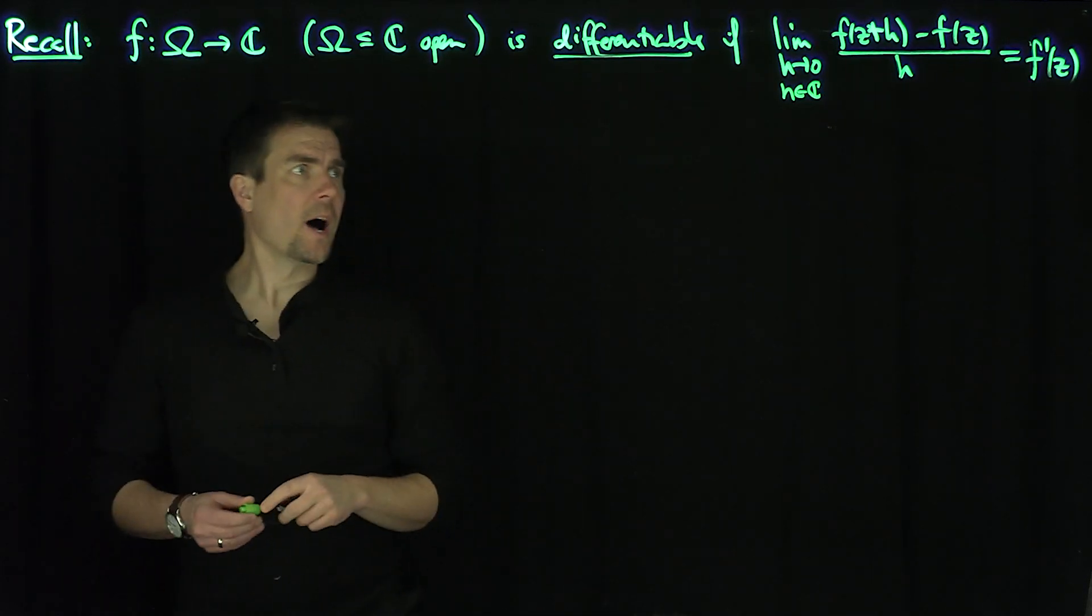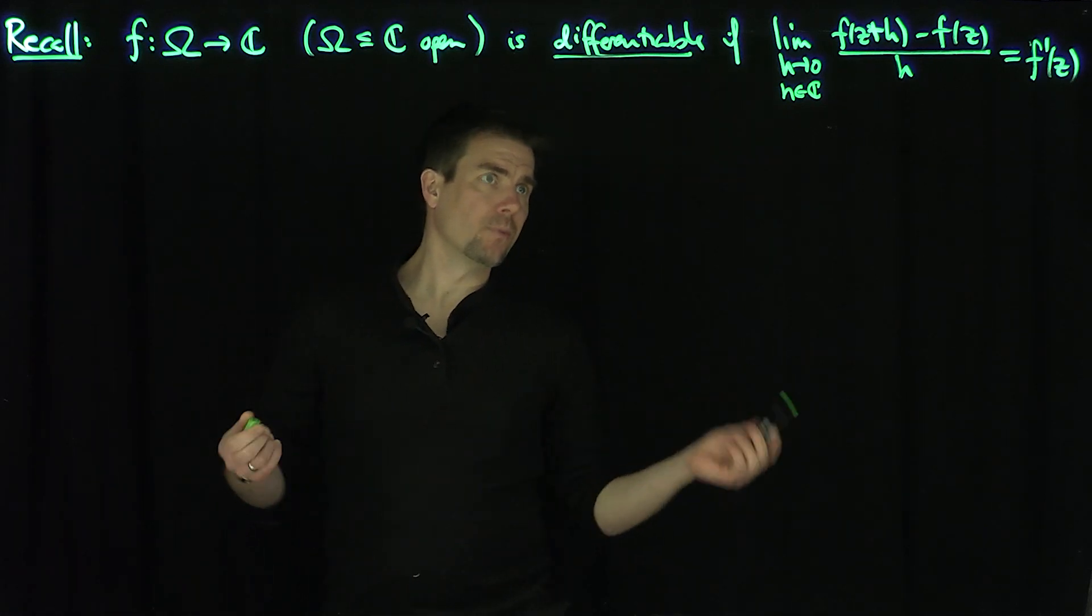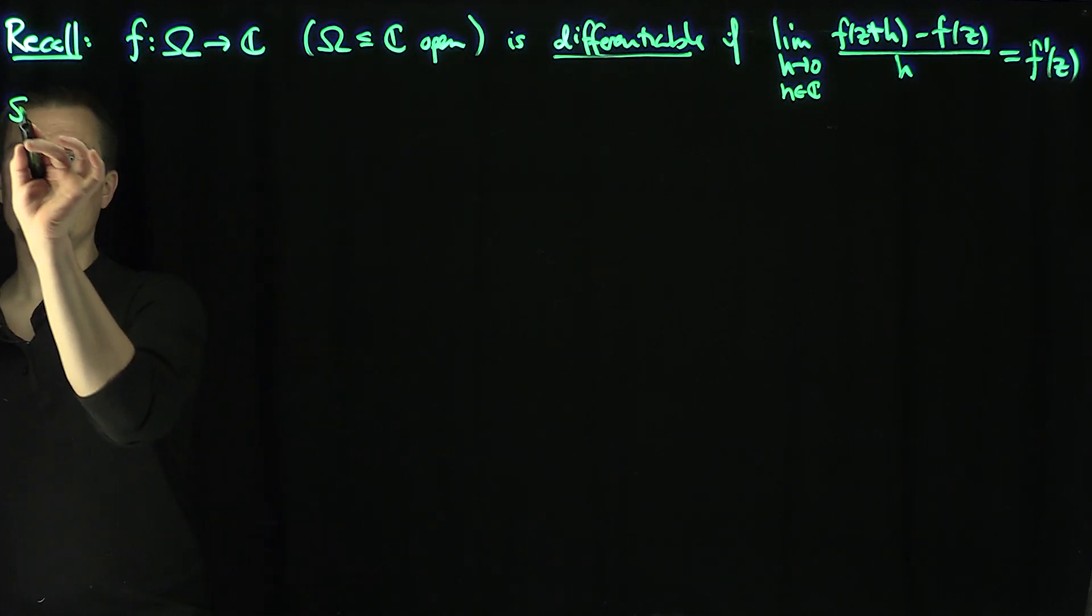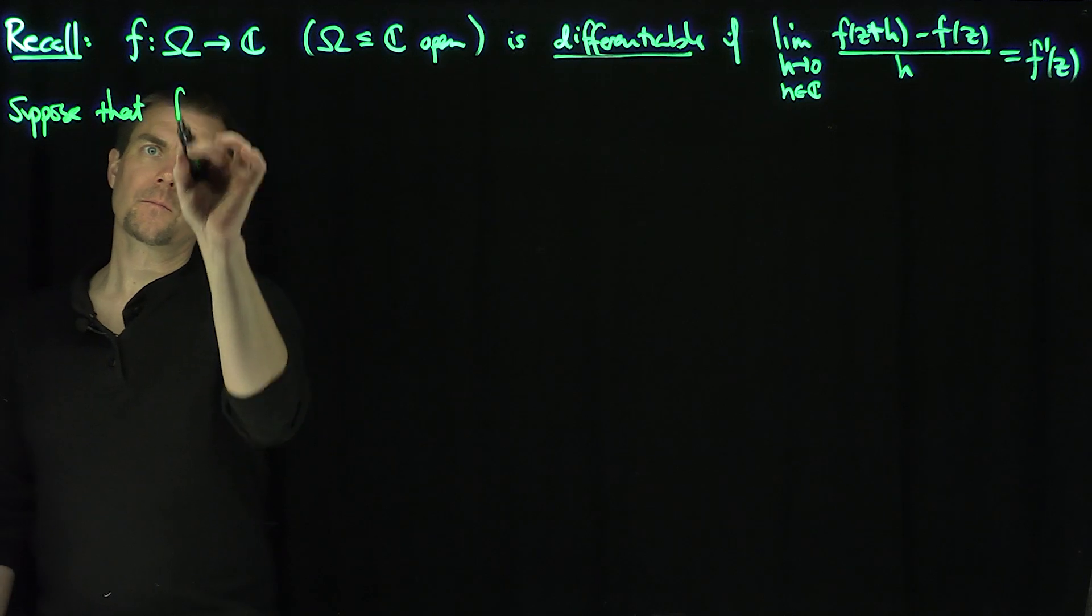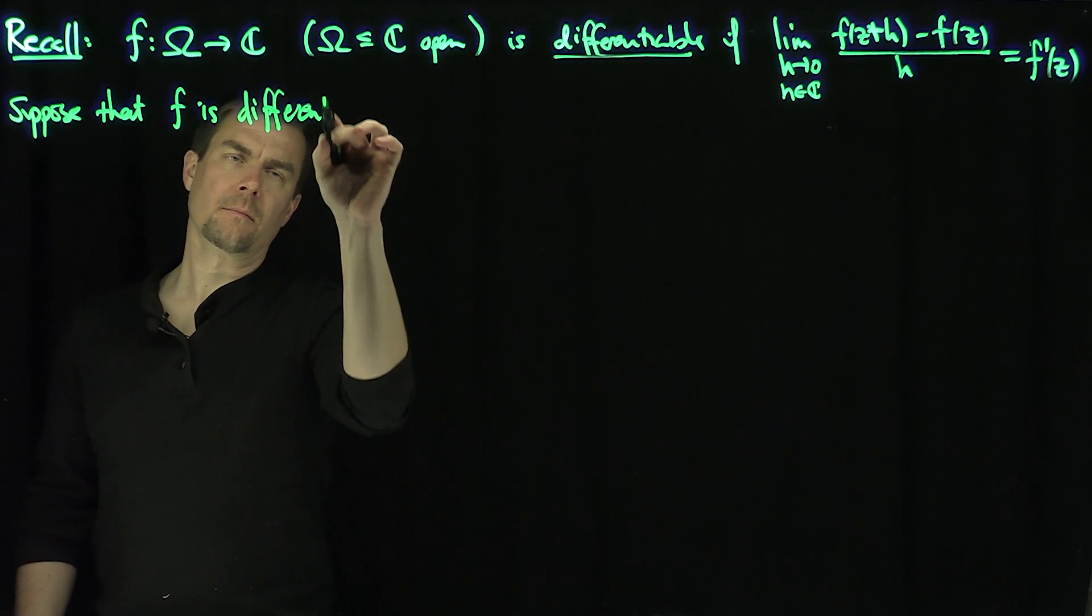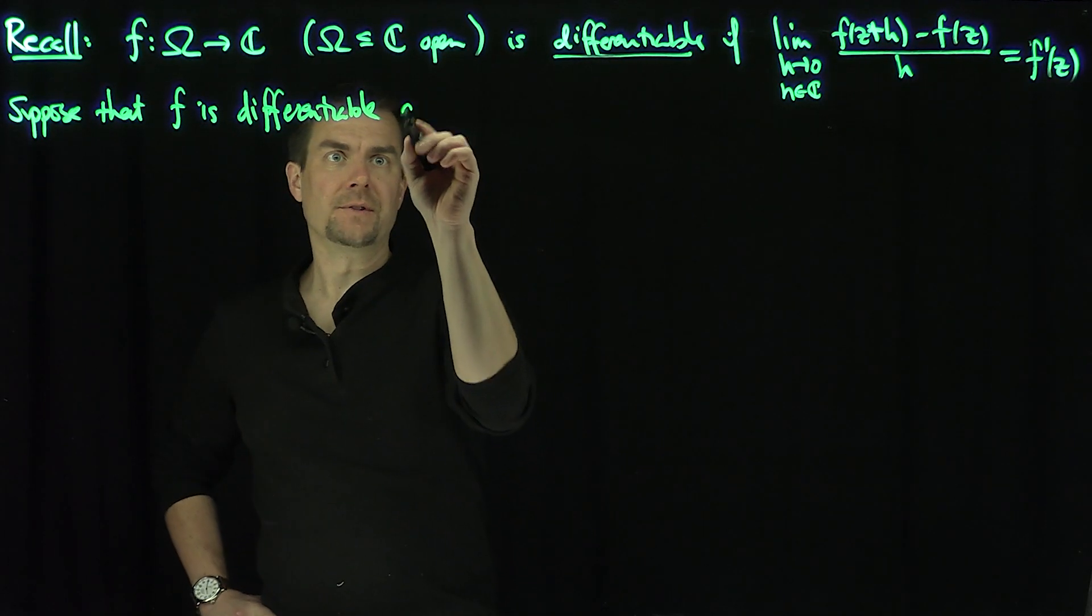Now what we're going to do is choose two trajectories. I can choose h to be real valued or complex valued. So suppose that f is differentiable at point z.